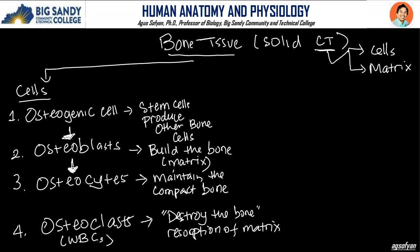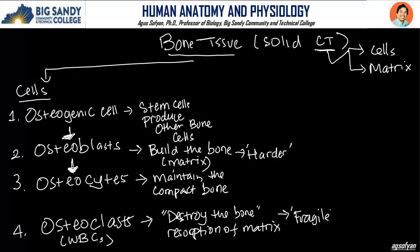So the osteoblast will build the bones and make the bone harder, while the osteoclast is the one that destroys the bone, making the bones become fragile. You will see these functions again later.